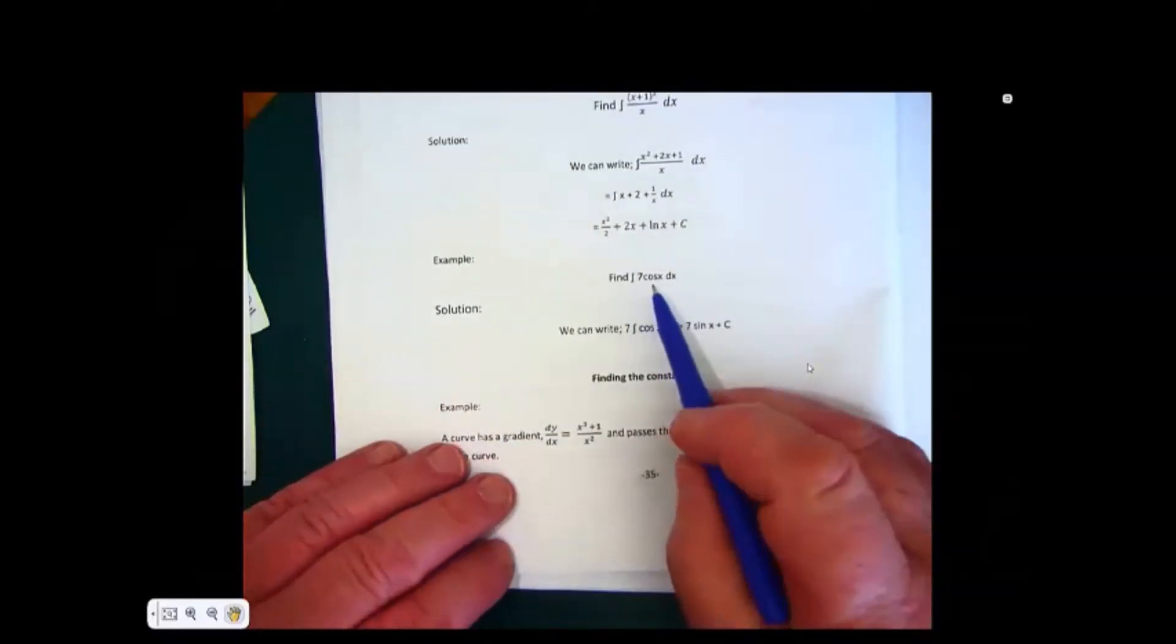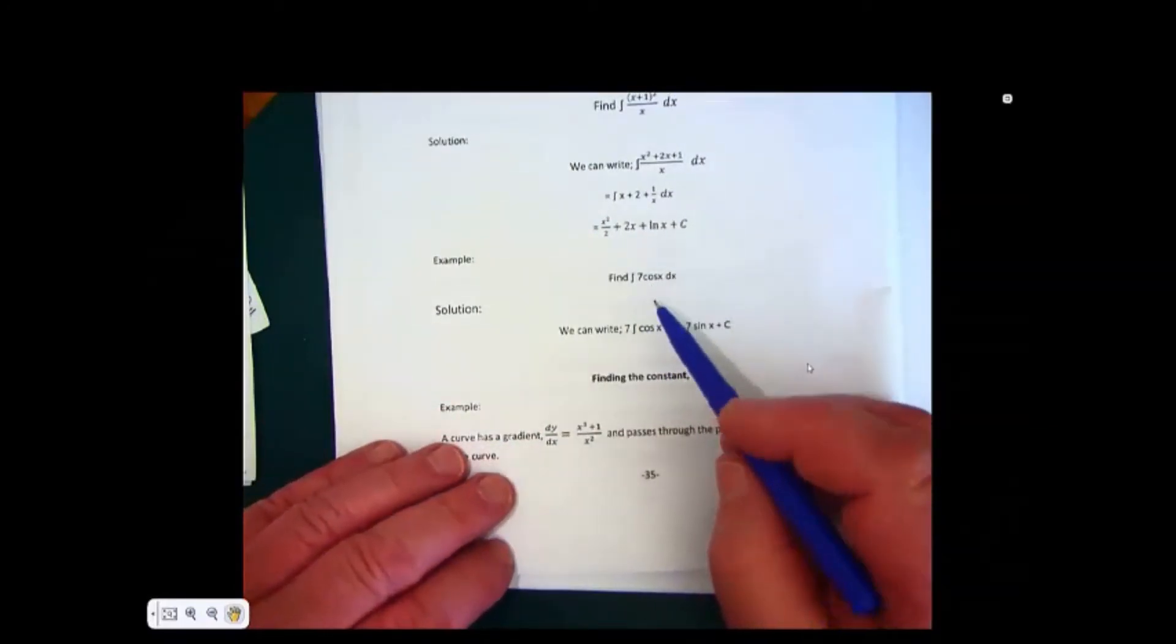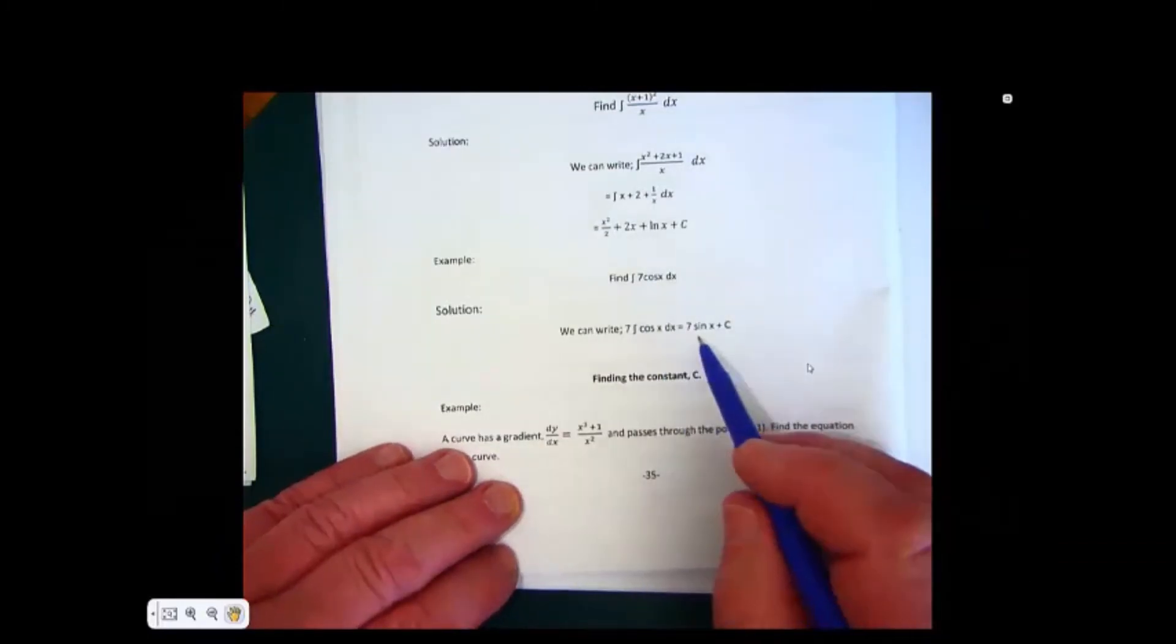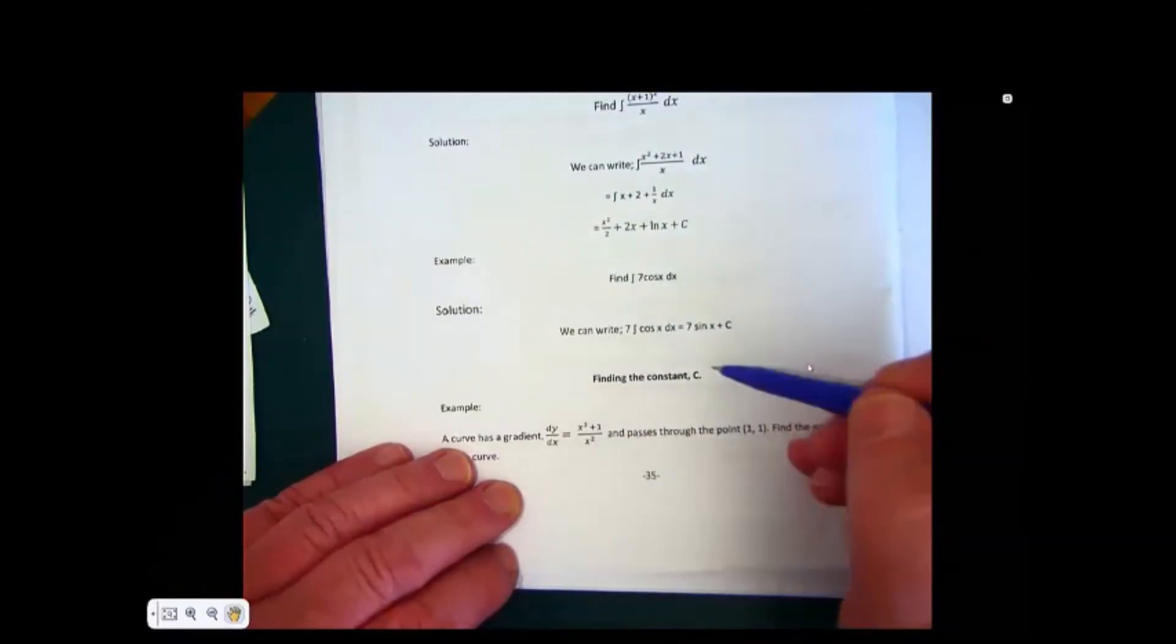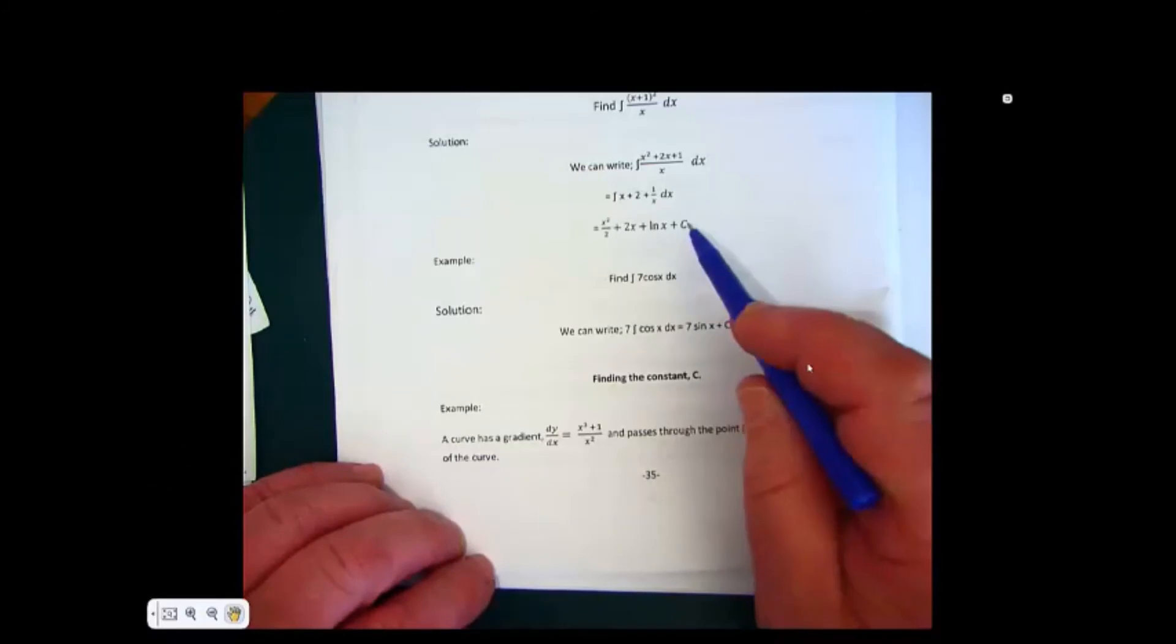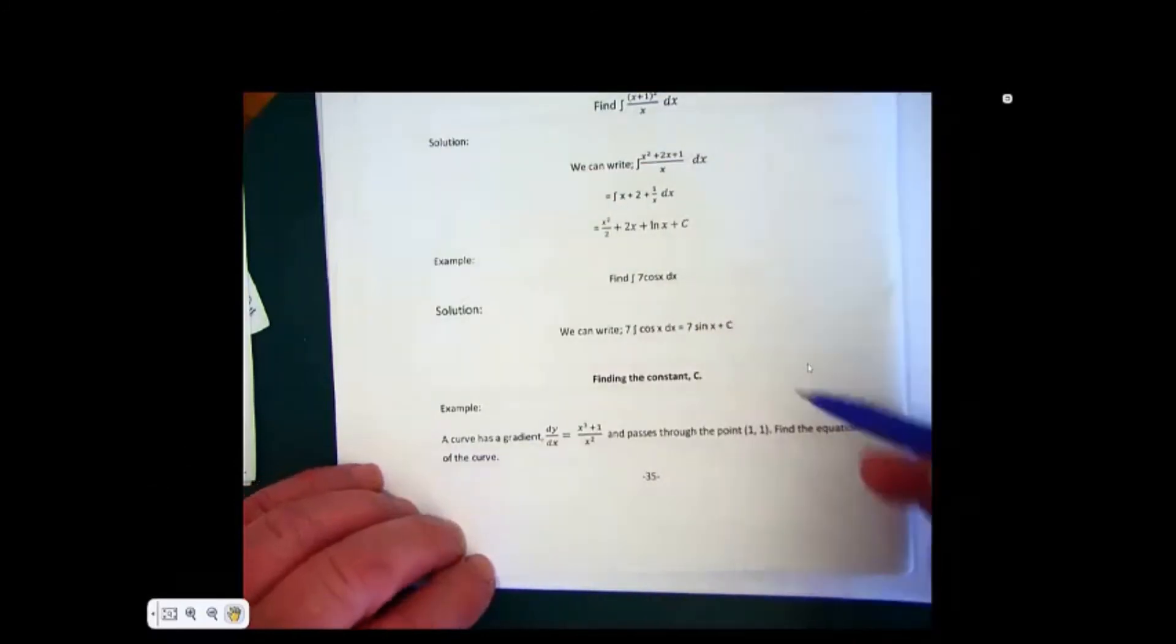Again, with a cosine, integrate 7 cos x, you go back to your trig form, and cos x will actually integrate into sin x. 7 is a constant, and because you're going back into a family of curves, you will need the letter c for constant here.